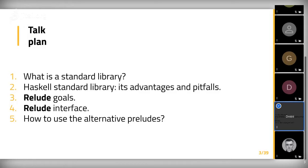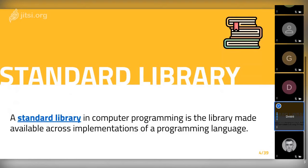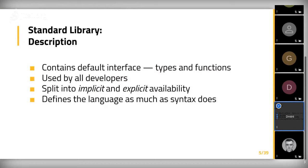What is the standard library? A standard library in computer programming is the library made available across implementations of a programming language. This is a definition taken from Wikipedia, but it doesn't give the full impression of what a standard library is. A standard library should contain the default interface, default types and functions which you are using by default. When you have nothing, you are using types from the standard library, and if they're not enough, you need to use other libraries to solve your problems.